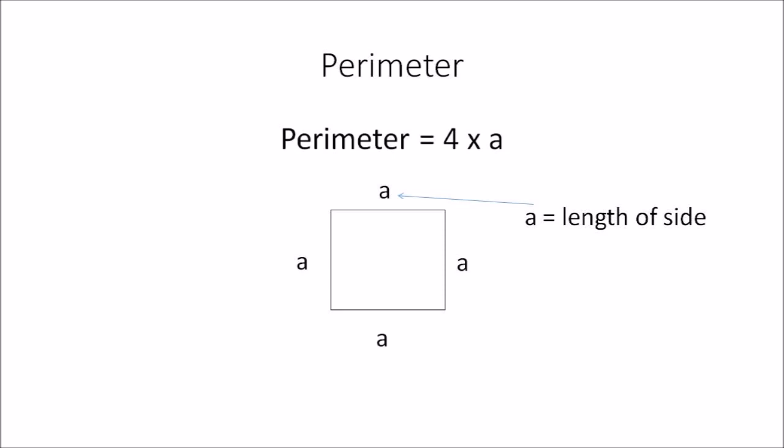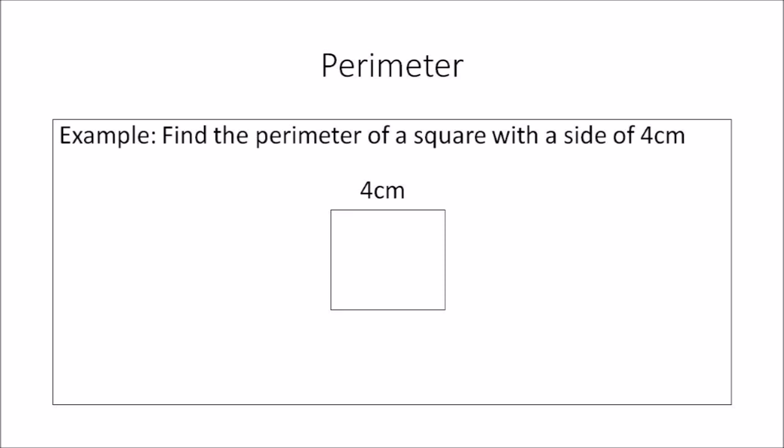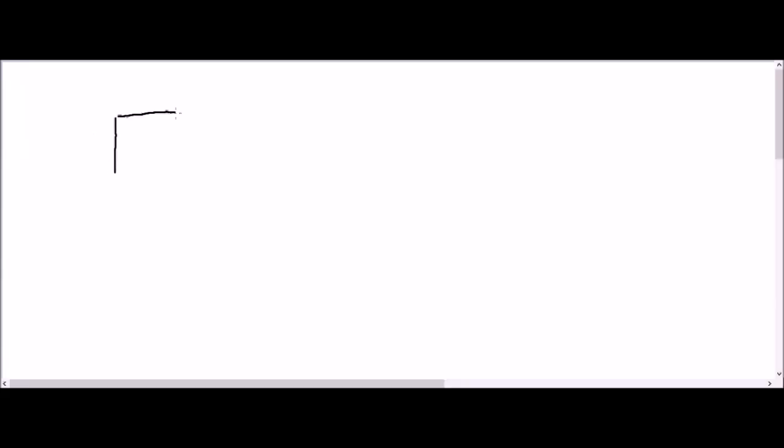Now, in order to understand the formula better, we'll do some examples. In this example: find the perimeter of a square with a side of 4 centimeters. That means one of the sides of this square is 4 centimeters and we have to calculate its perimeter — the total distance around the square. We'll draw the square and label each of the sides because they're equal, so each side will be 4.